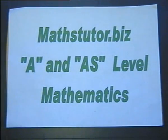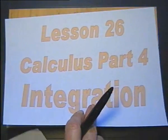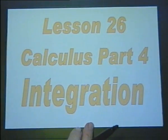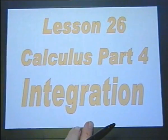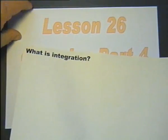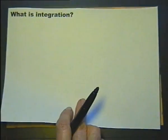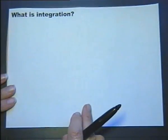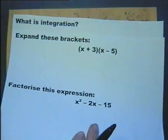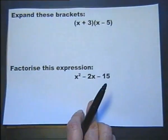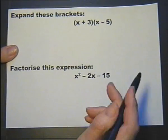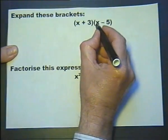This is an A and AS level mathematics lesson — lesson 26, calculus part 4: integration. We're going to be looking at what integration is and some examples of integration. Let's look at a familiar process in mathematics: expand these brackets, so we multiply both terms by both terms in this bracket.